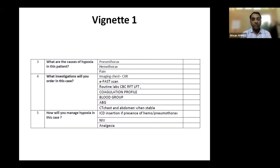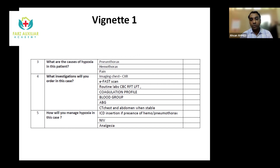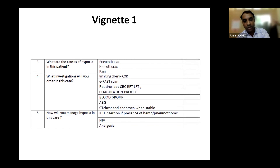The final question in the first minute: how will you manage hypoxia in this case? If the eFAST scan shows hemothorax or pneumothorax on the left side, insert an ICD. Try NIV if possible; if not available, proceed to invasive mechanical ventilation. Give adequate analgesia and sedation as the patient is agitated and confused. If suspecting tension pneumothorax, do not wait for imaging — go immediately for needle decompression, then imaging, then definitive ICD insertion.